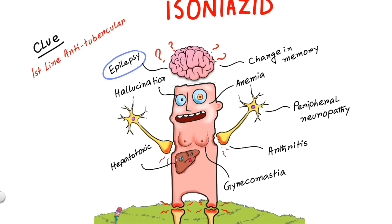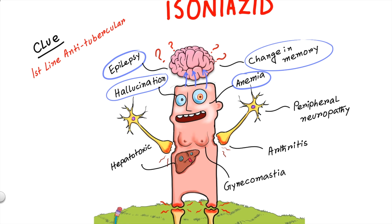The altered brain image will remind you of the neuropsychiatric symptoms like change in memory, euphoria, and epilepsy, as the drug crosses the blood-brain barrier effectively. The 'I' expression will remind you of hallucinations, the pale face signifies anemia, and one of the common side effects is peripheral neuropathy — the two neuron hands will remind you of this side effect.